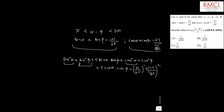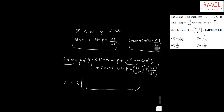We know that sin squared alpha plus cos squared alpha is 1, and sin squared beta plus cos squared beta is also 1, so this gives 2 plus 2 multiplied by (cos alpha cos beta plus sin alpha sin beta). And we know this is the formula for cos(alpha minus beta), so we can write cos(alpha minus beta) here.